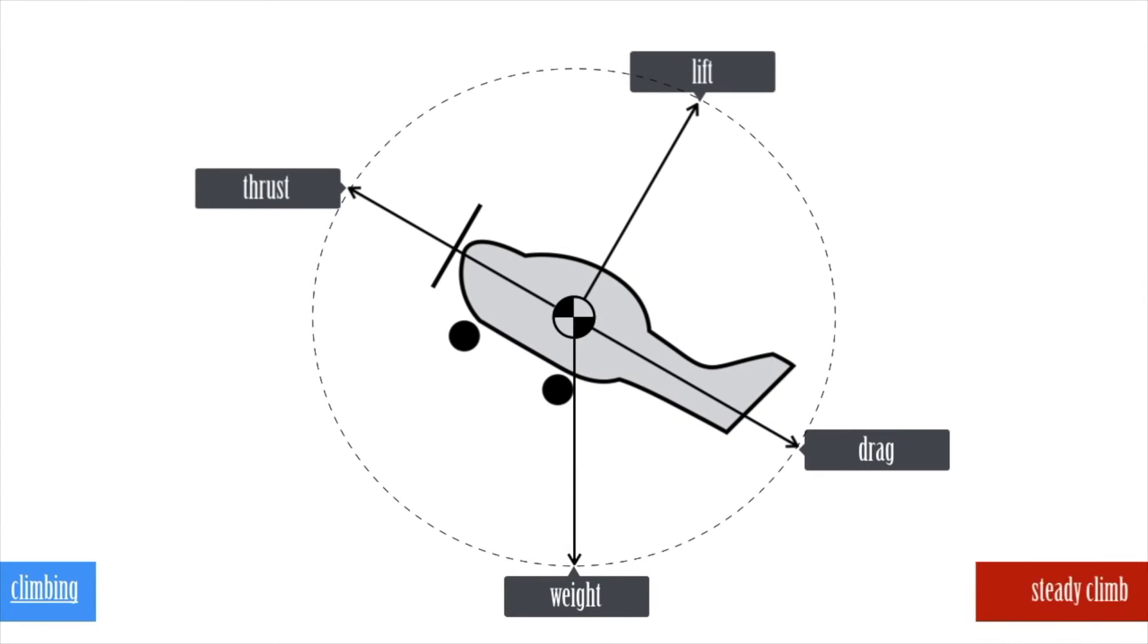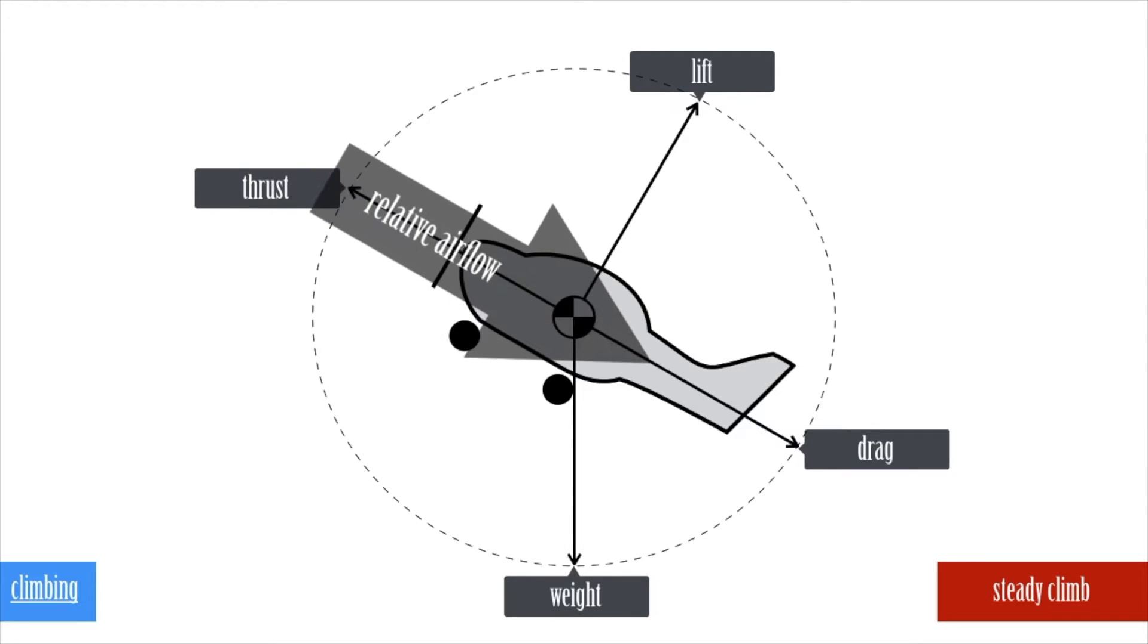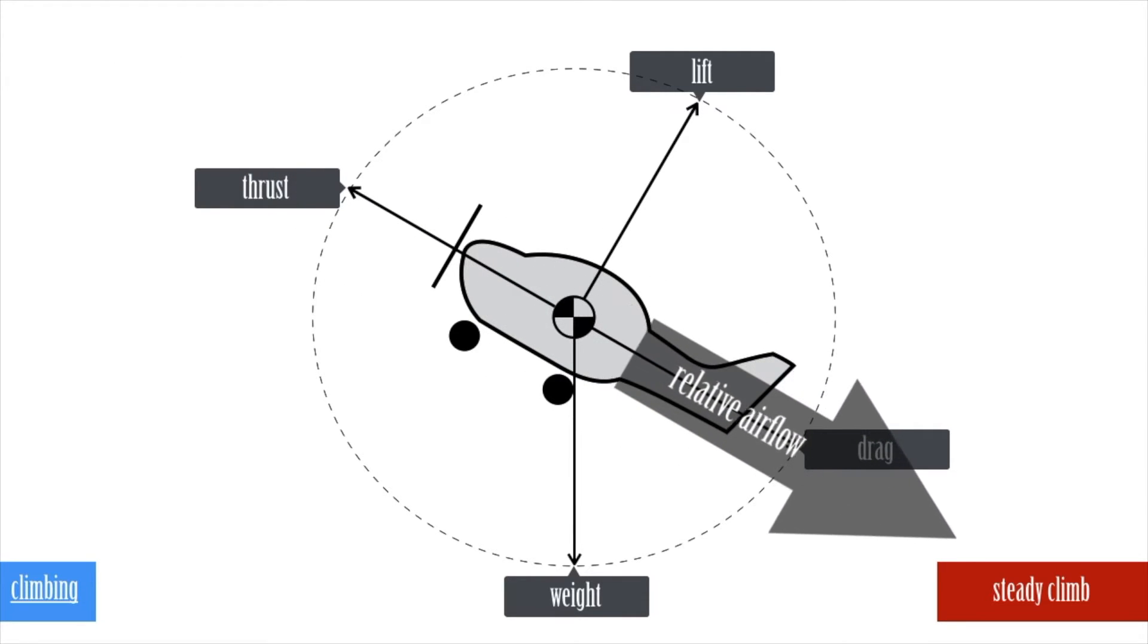In a steady climb the aeroplane is also in the state of equilibrium. Thrust and drag act in line with the relative airflow along the aeroplane's flight path, whereas lift acts at right angle to the relative airflow. Weight acts down towards the centre of the earth.